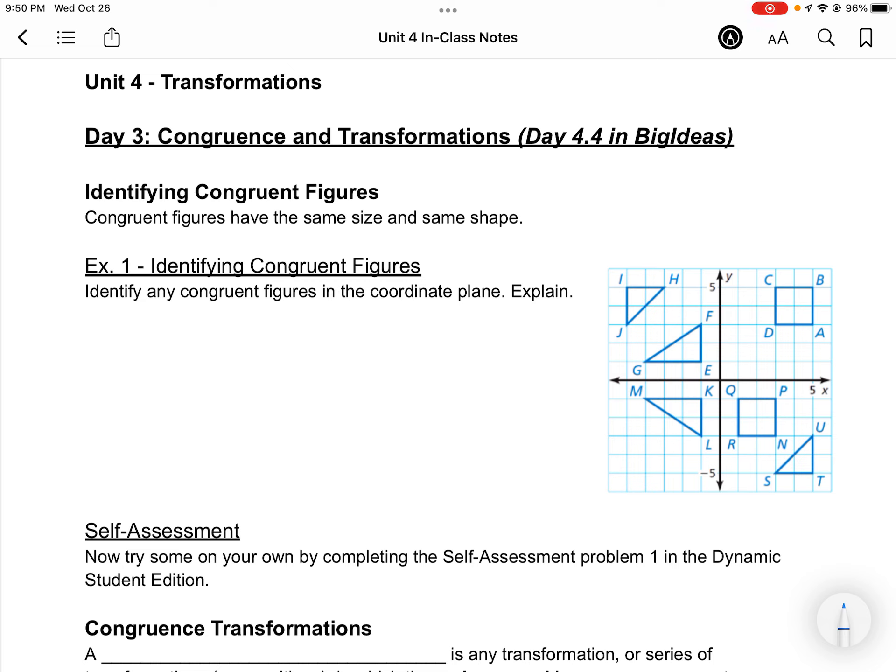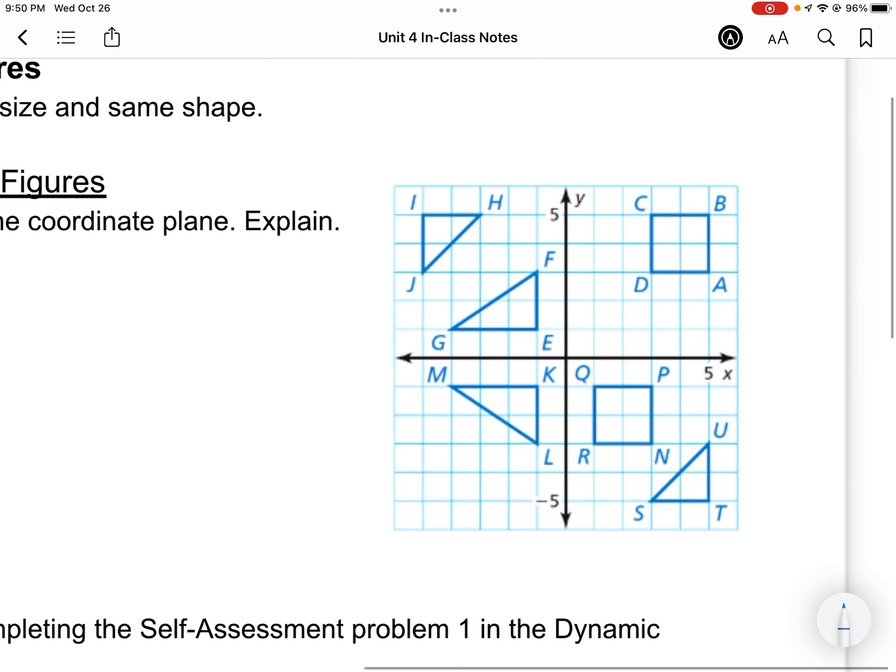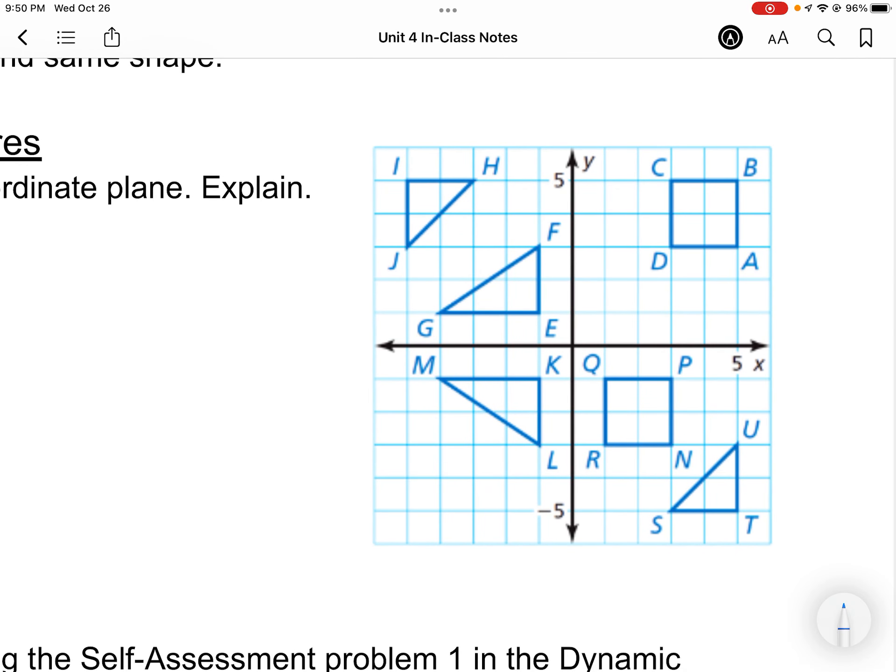In this lesson, we're going to start by identifying congruent figures. Congruent figures are figures that have the exact same size and shape. So what I want you to do is take a minute or two and look at this graph, and I want you to identify any of these figures that would be congruent to each other. You can color code them, you can draw arrows, or you can name them according to what they are.